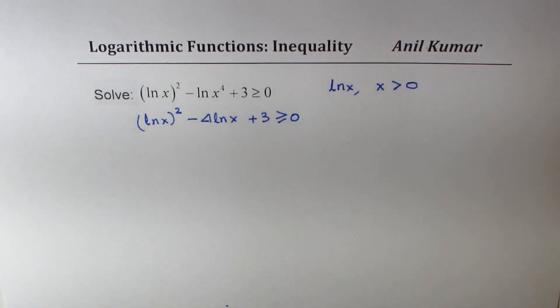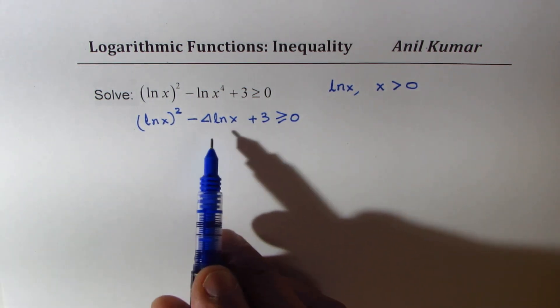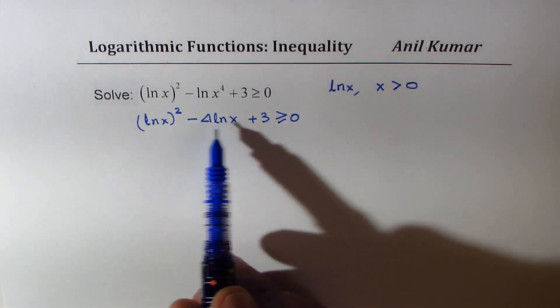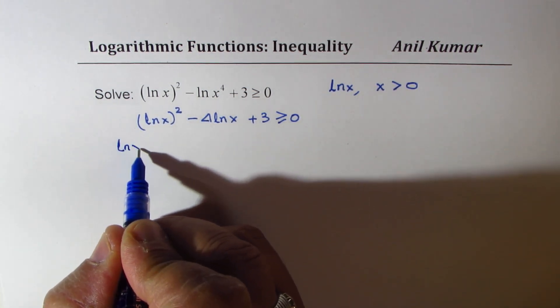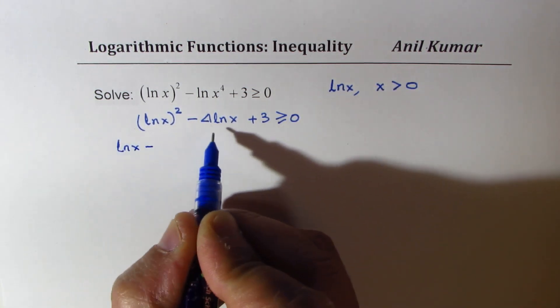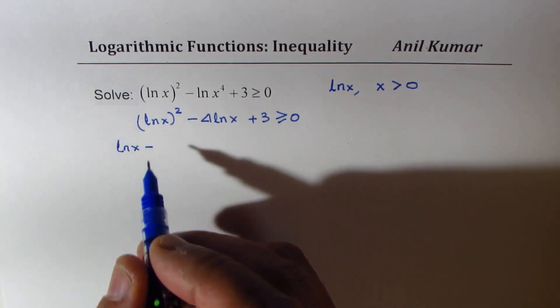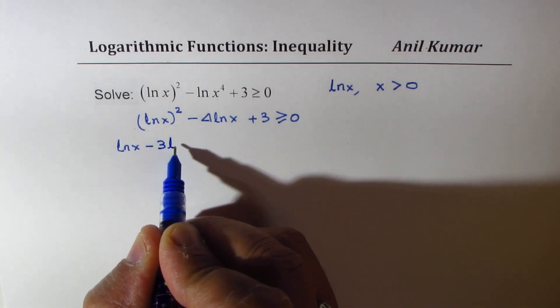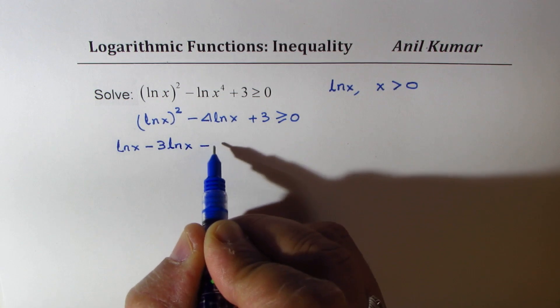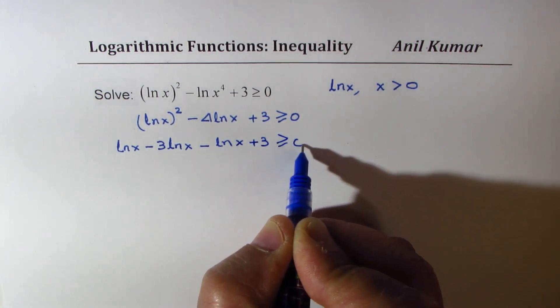In this particular case treat it as a quadratic equation. Let's factor product of 3 sum of minus 4. So we could write this as ln x minus 3 times 1 will give you minus 3. So we could write this as minus 3 ln x minus ln x plus 3 greater than or equal to 0.